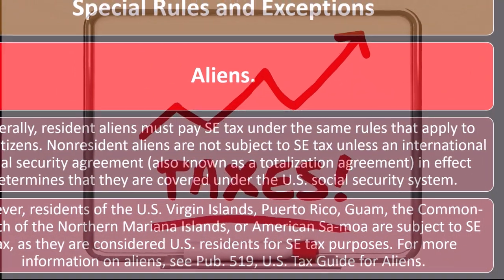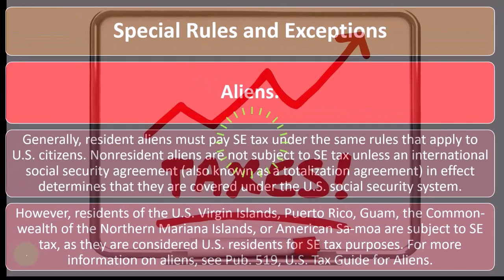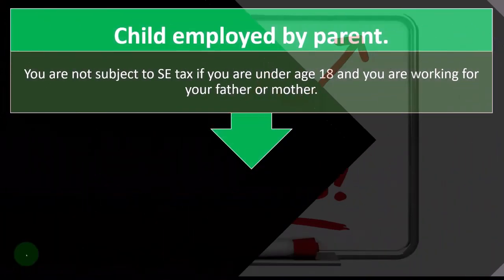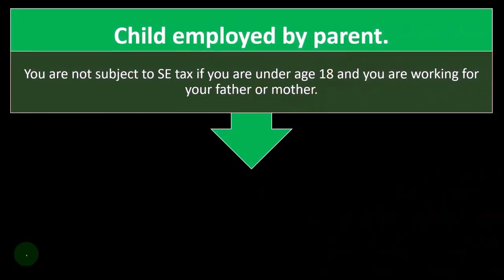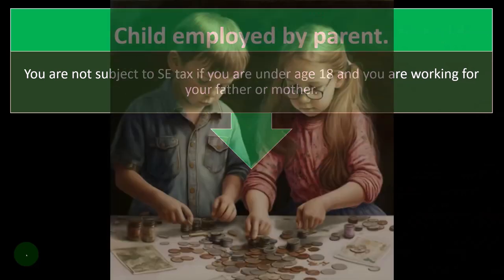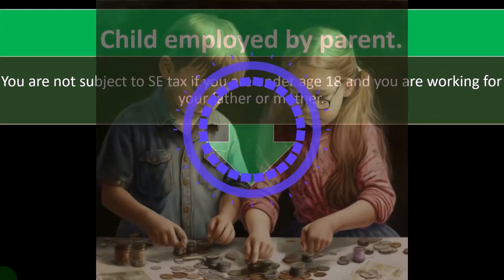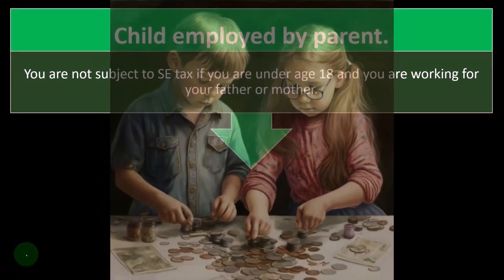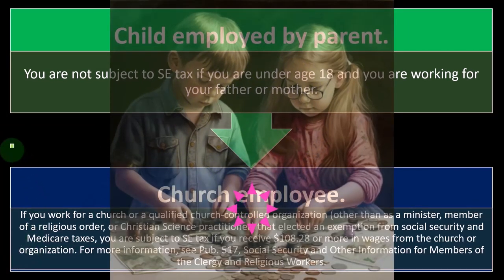For more information on aliens, see Publication 519, US Tax Guide. Regarding a child employed by a parent: you are not subject to self-employment tax if you are under age 18 and you are working for your father or mother, which simplifies things a bit in that situation.